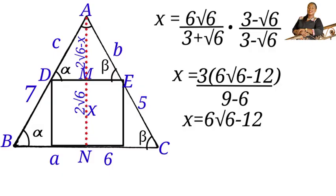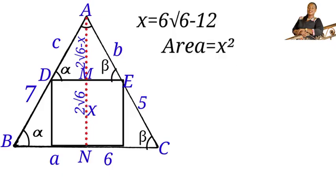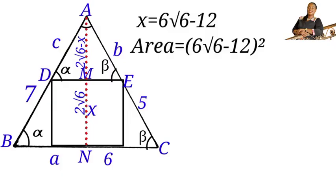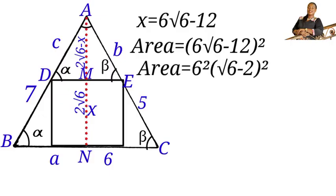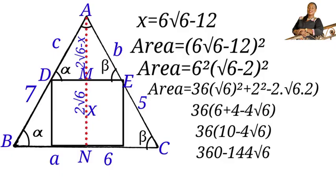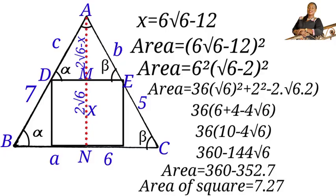Since we have found the side length x equals six root six minus twelve, we can now find the area of the square. Area of square equals x squared, so we substitute: area equals bracket six root six minus twelve squared. Factoring out six, we get six squared times bracket root six minus two squared. Expanding and simplifying gives three hundred sixty minus one hundred forty-four root six, which approximates to three hundred sixty minus three hundred fifty-two point seven, giving a final area of approximately seven point two seven square units.